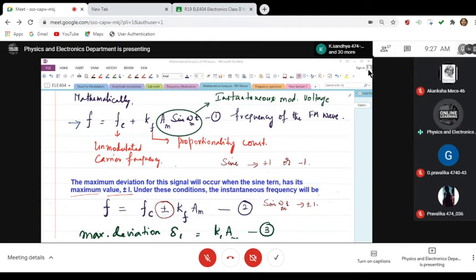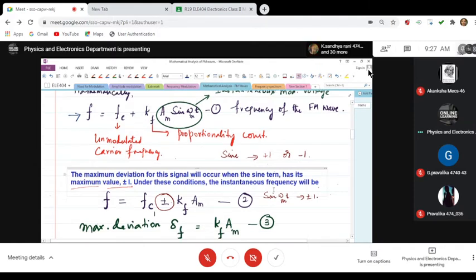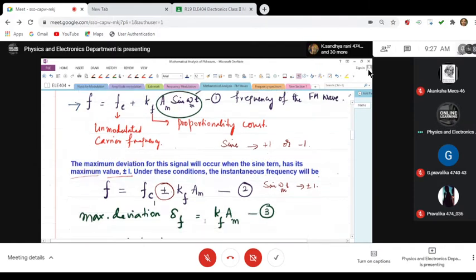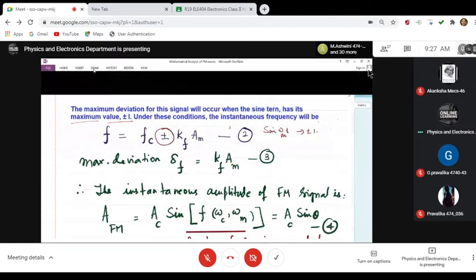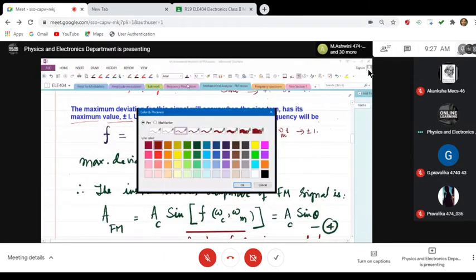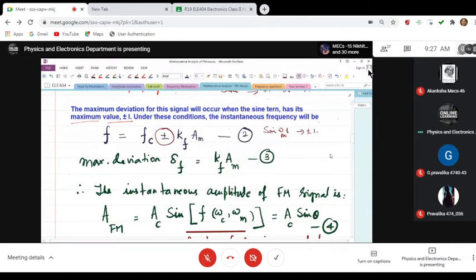What it means is the maximum deviation can occur which is equal to k_f times a_m. This k_f times a_m is the maximum deviation, and you represent it by an amount given by delta f. Where k_f is your proportionality constant.